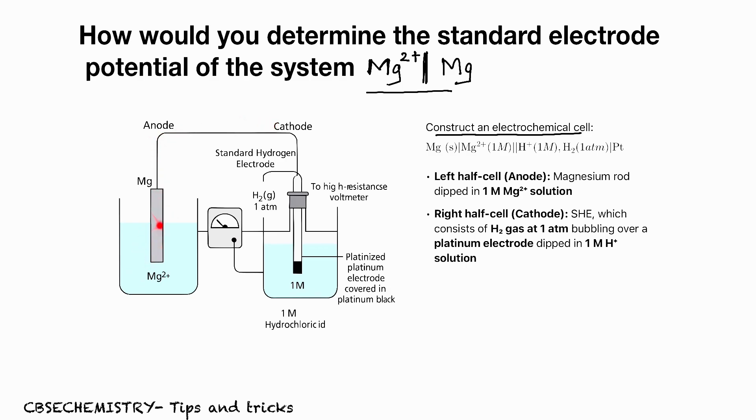So here oxidation is taking place and here reduction is taking place. If you observe the voltmeter reading, you can see that the value is 2.36 volt.